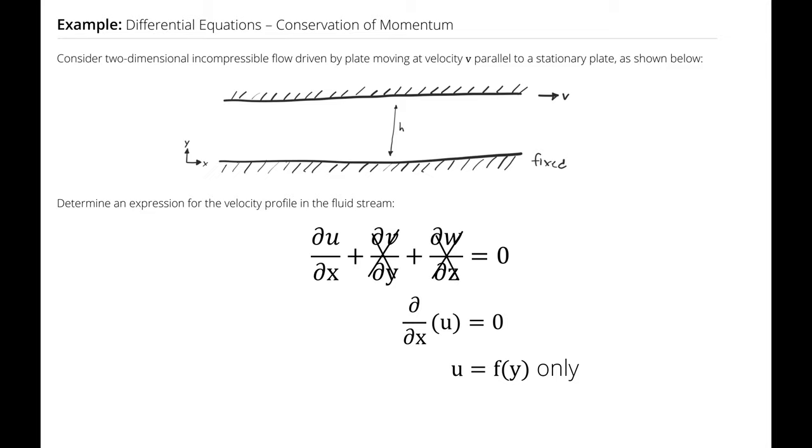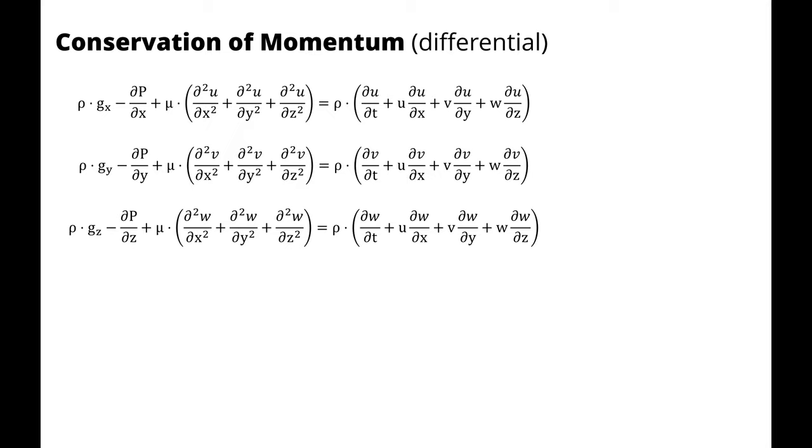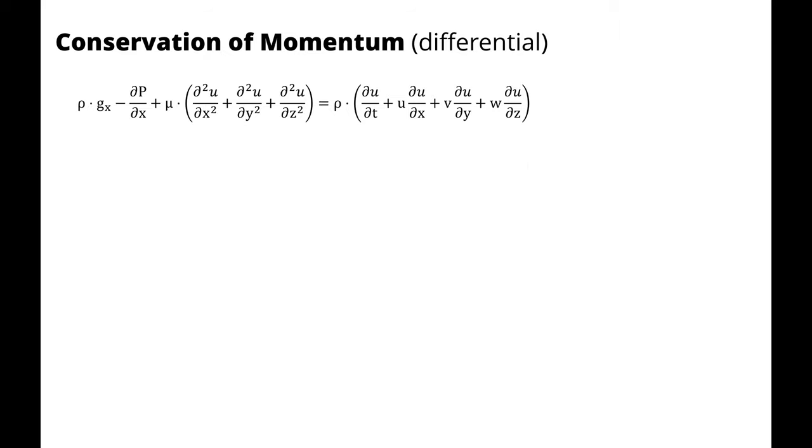That's useful because when I start looking at my conservation of momentum equations for this constant viscosity incompressible flow, I can simplify many of the terms. First of all, I recognize that I only care about the x direction because there's only an x component of velocity. So I can get rid of the y direction and z direction entirely.